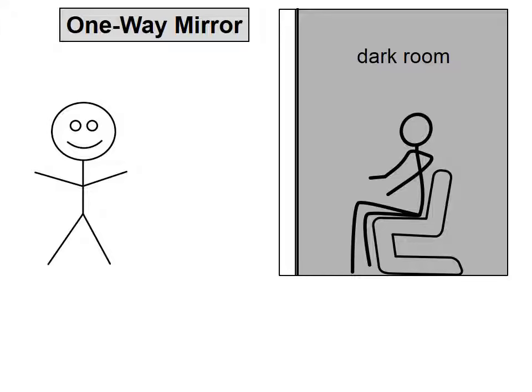A one-way mirror operates in the following way. You have someone who is observed in a bright space, and you have an observer in a comparatively dark space.